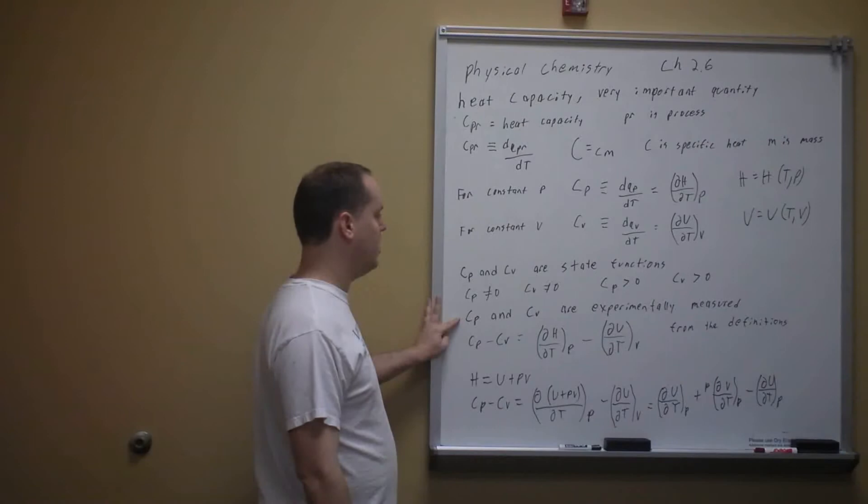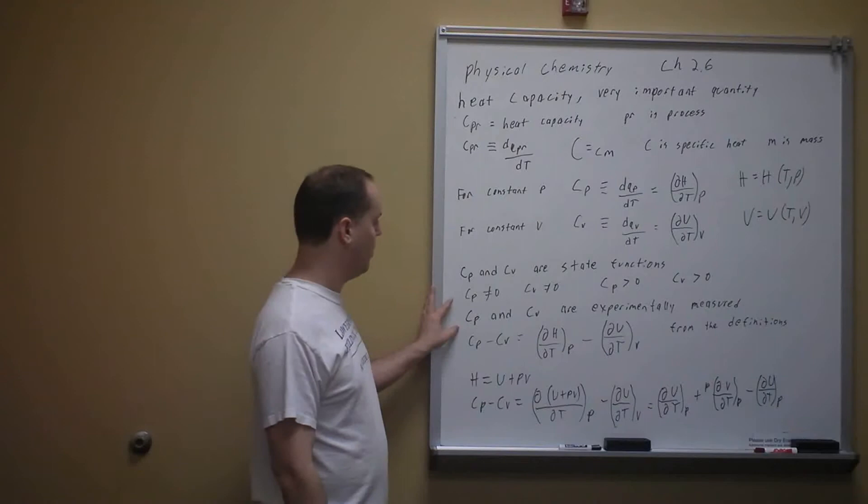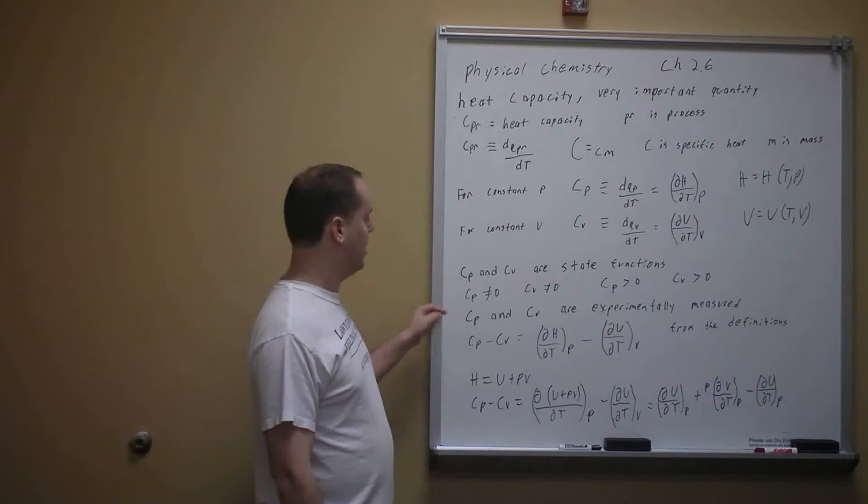Cp and Cv are state functions. They are never equal to zero — they are always positive. Later in this chapter we will come up with ways to estimate them, and when we get to quantum mechanics we will have better ways to explain them. For now, they are experimentally measured.